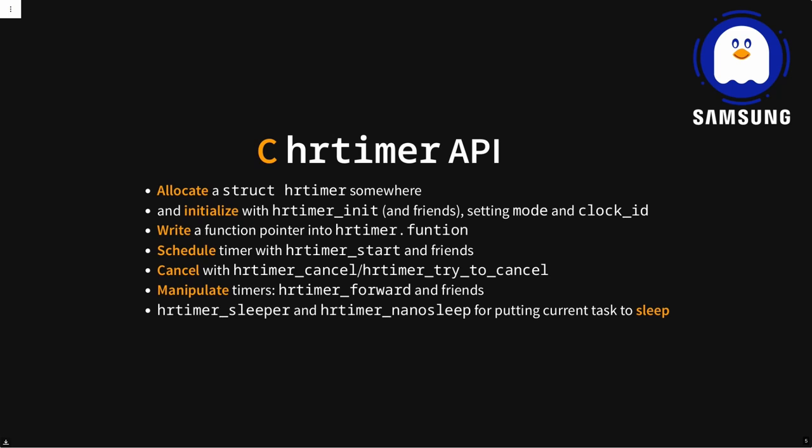Briefly, the C HR timer API, as I understand it, has these components. To use it, you allocate a struct HR timer, you initialize it after you allocate it, and you write a function pointer into the struct which will be the function called when your timer expires. You then arm the timer or schedule it with one of the HR timer start functions. You can cancel the timer and manipulate the expiration date. That's the interface we have for these timers.